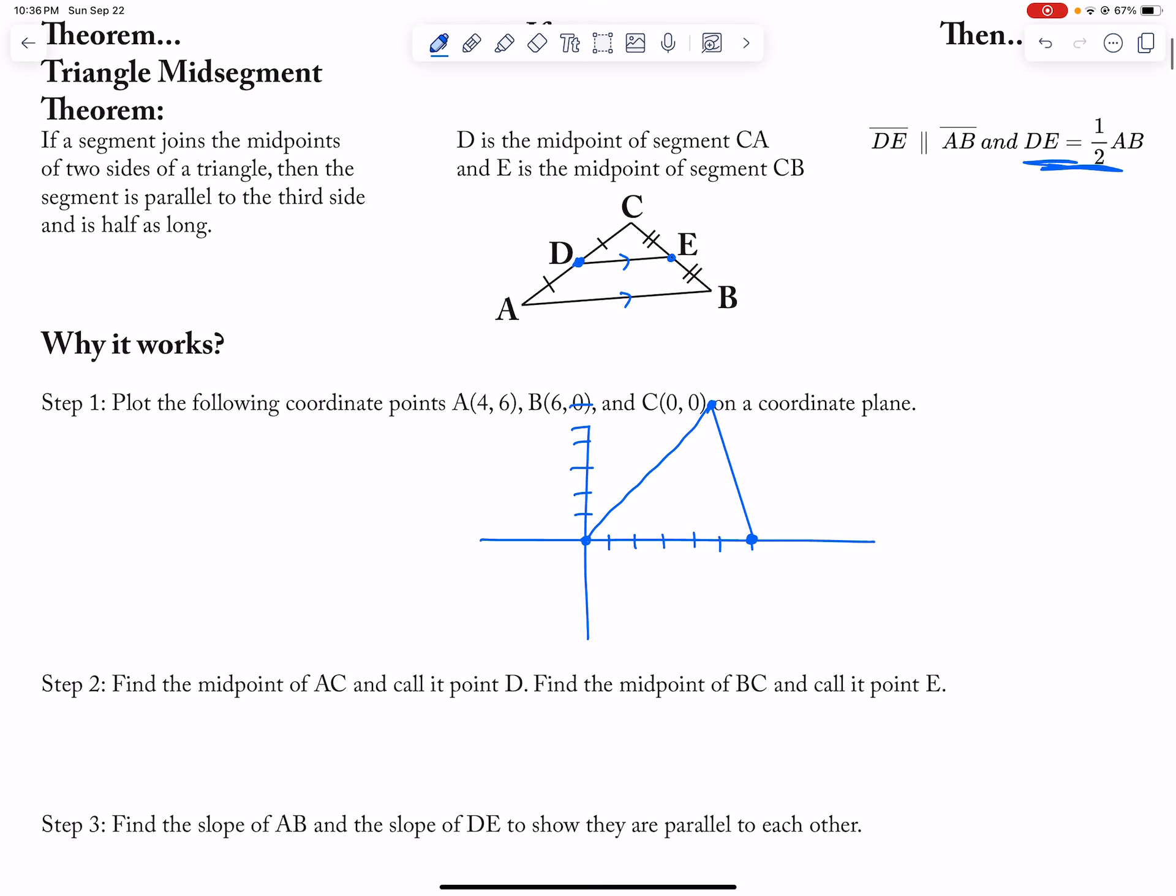And then, if I found the midpoint, which the midpoint of AC is going to be, well, we're going to call it D, is 0 plus 4 divided by 2 comma 0 plus 6 divided by 2. So I get that this is 2 comma 3. So 2, so this is D, this is C, and this is A, and this is B.